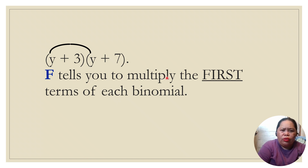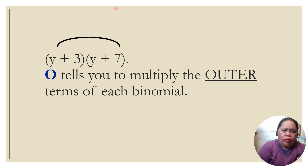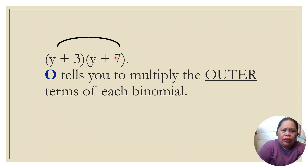F tells you to multiply the First terms of each binomial: y times y equals y squared. O tells you to multiply the Outer terms of each binomial: y times 7 equals 7y.